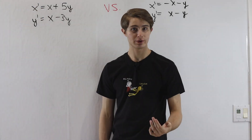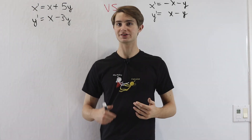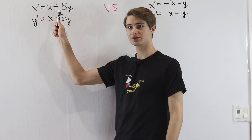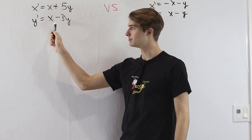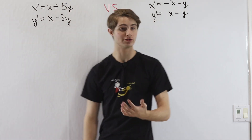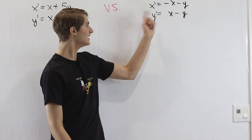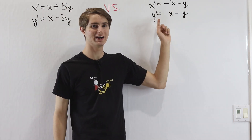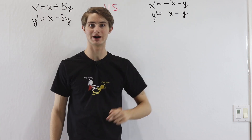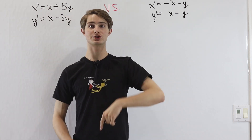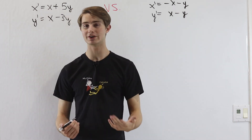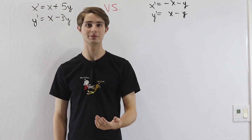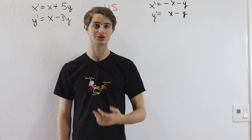We are going to do a differential equation battle, this time with systems. We have x prime equals x plus 5y and y prime equals x minus 3y, versus x prime equals negative x minus y and y prime equals positive x minus y. You can check the video in the description where I go over how to solve these — pause the video and try it for yourself, then come back and we can go through the solutions together.